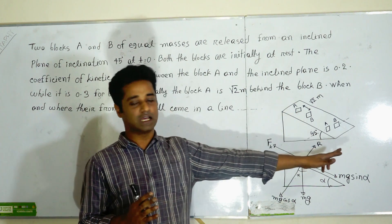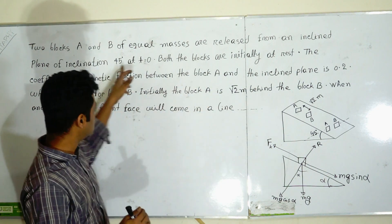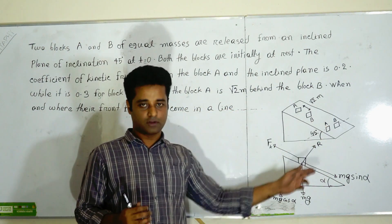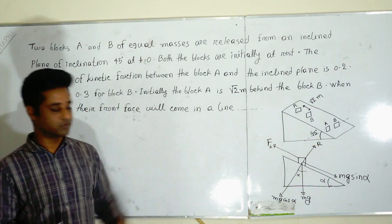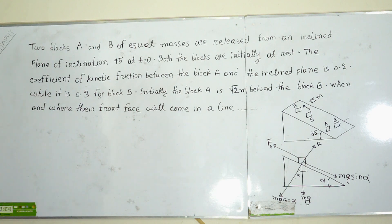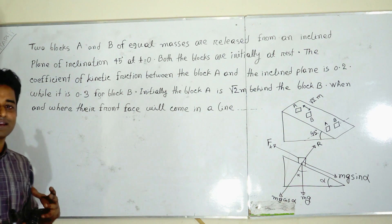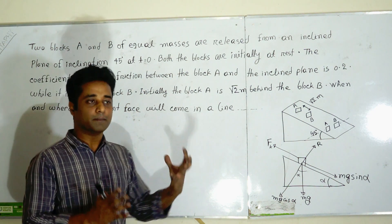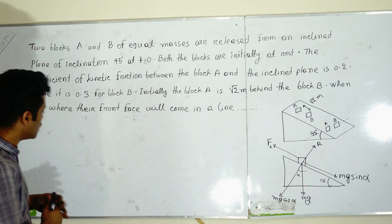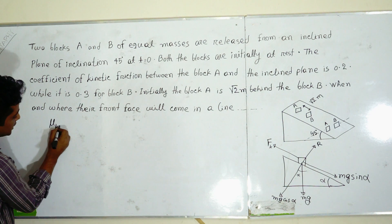The inclination is 45 degrees, so this is the angle — horizontal, which is 45 degrees. The coefficient of kinetic friction between block A and the inclined plane is 0.2. So if you know the coefficient of friction, what is μk? What is the function of μ?